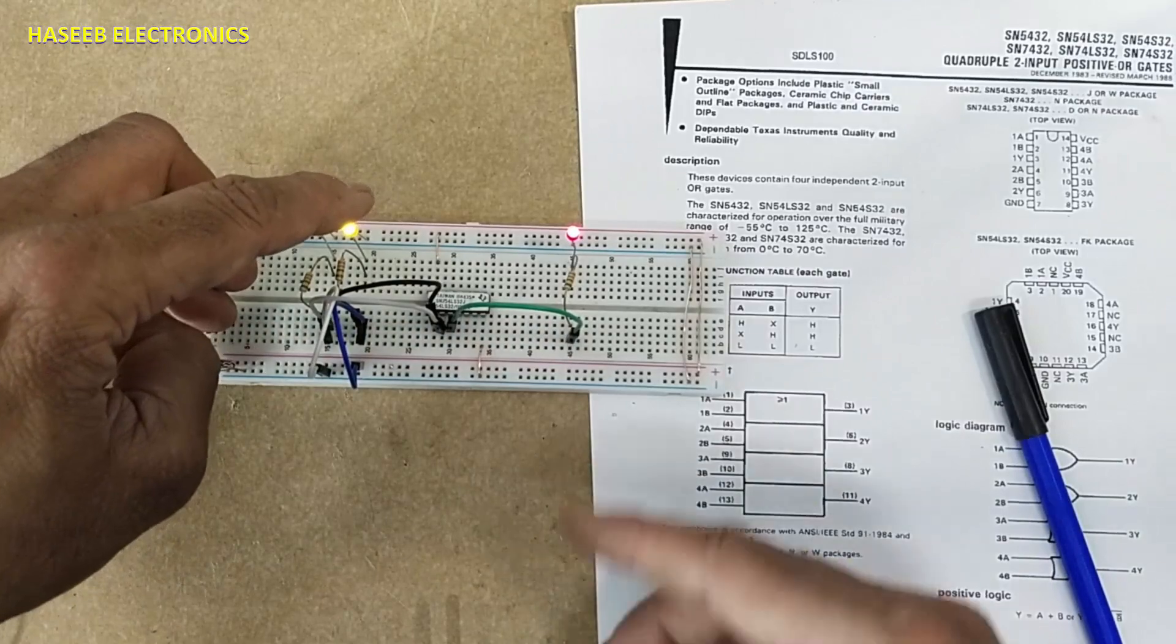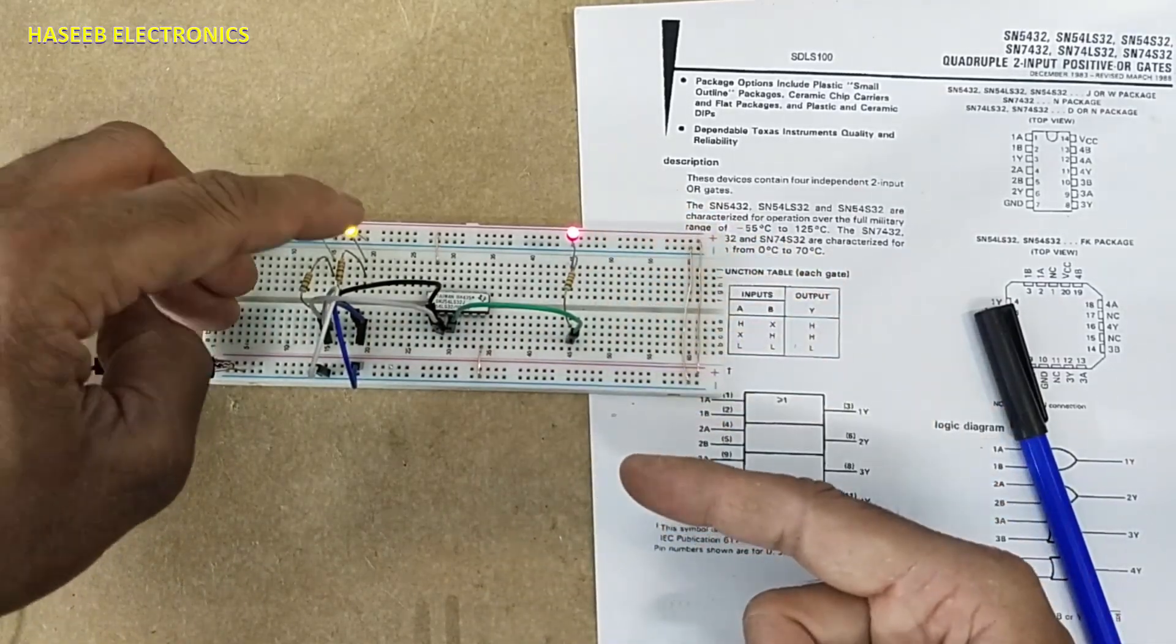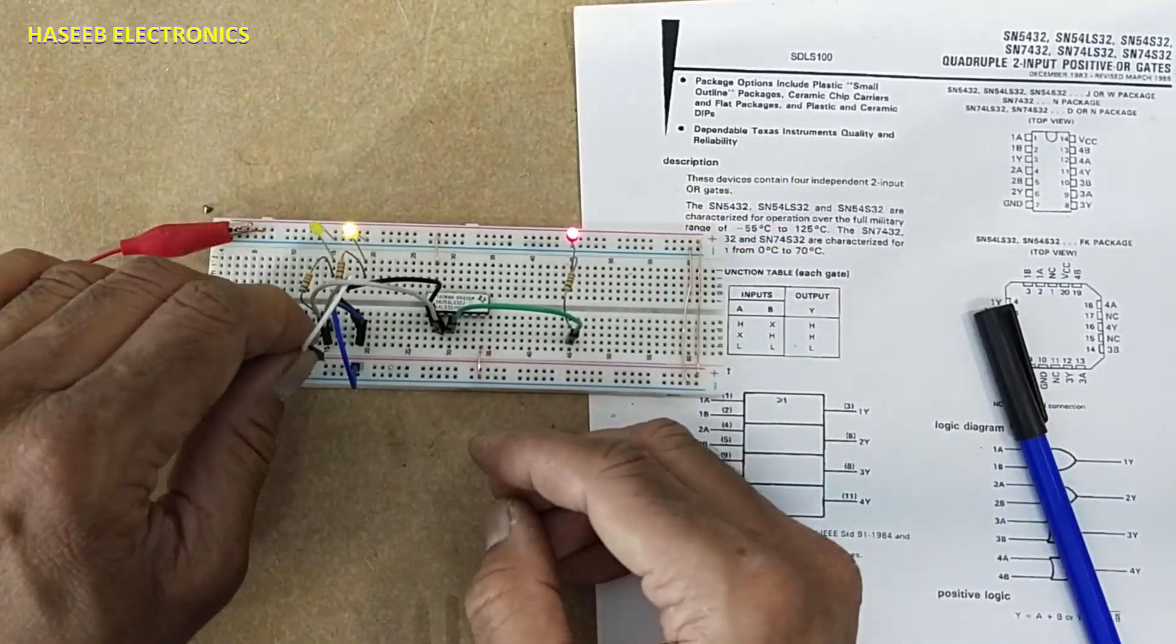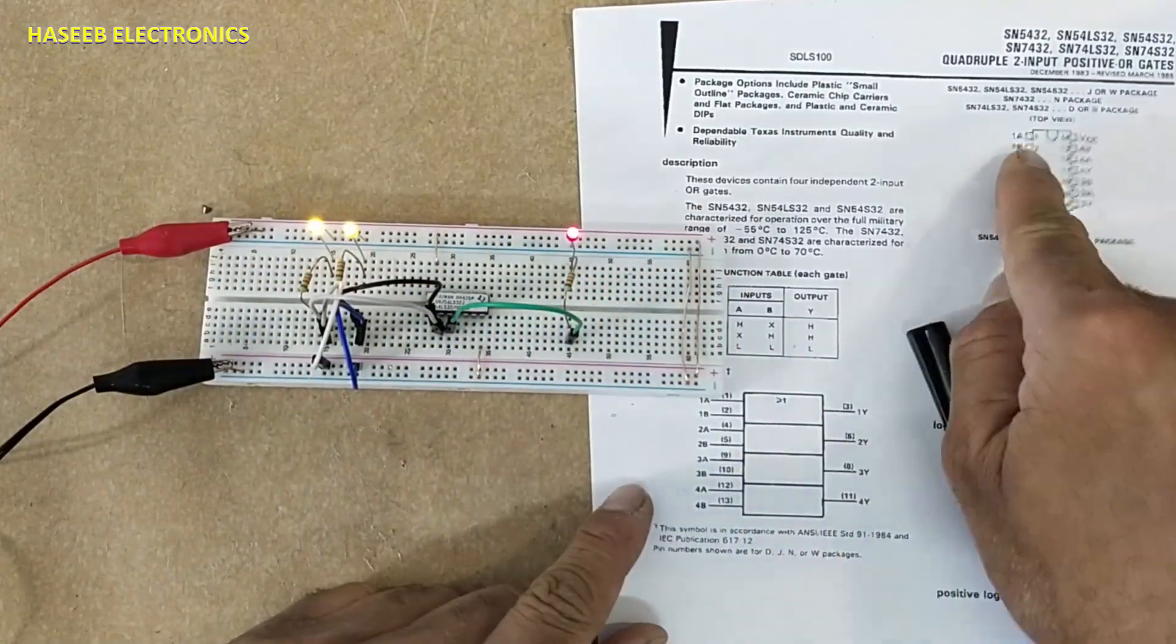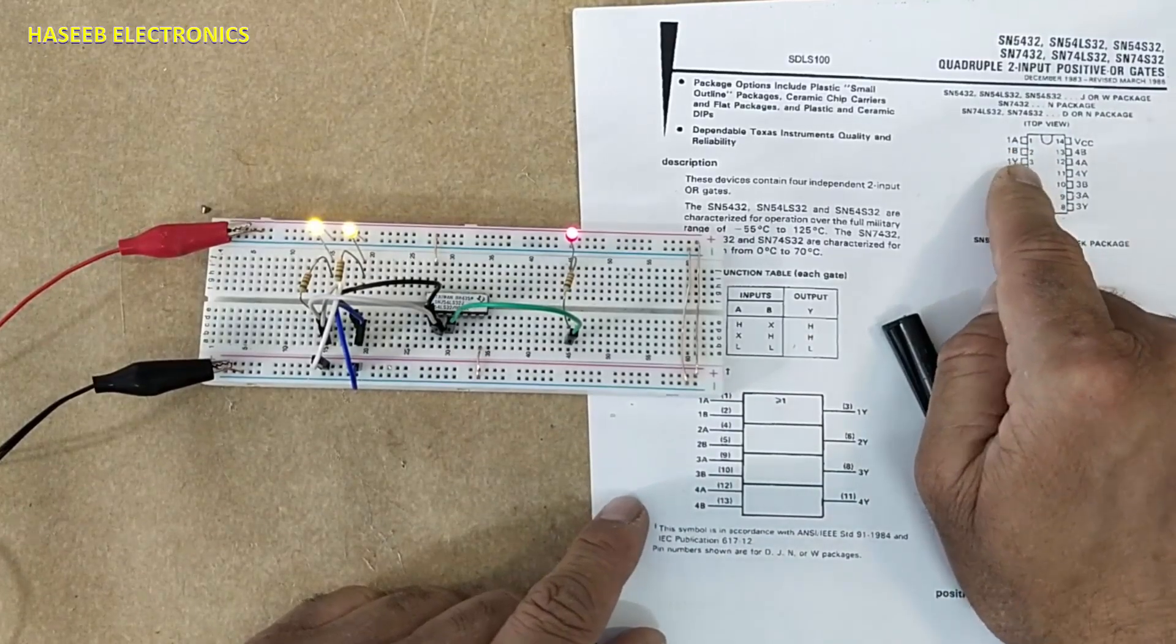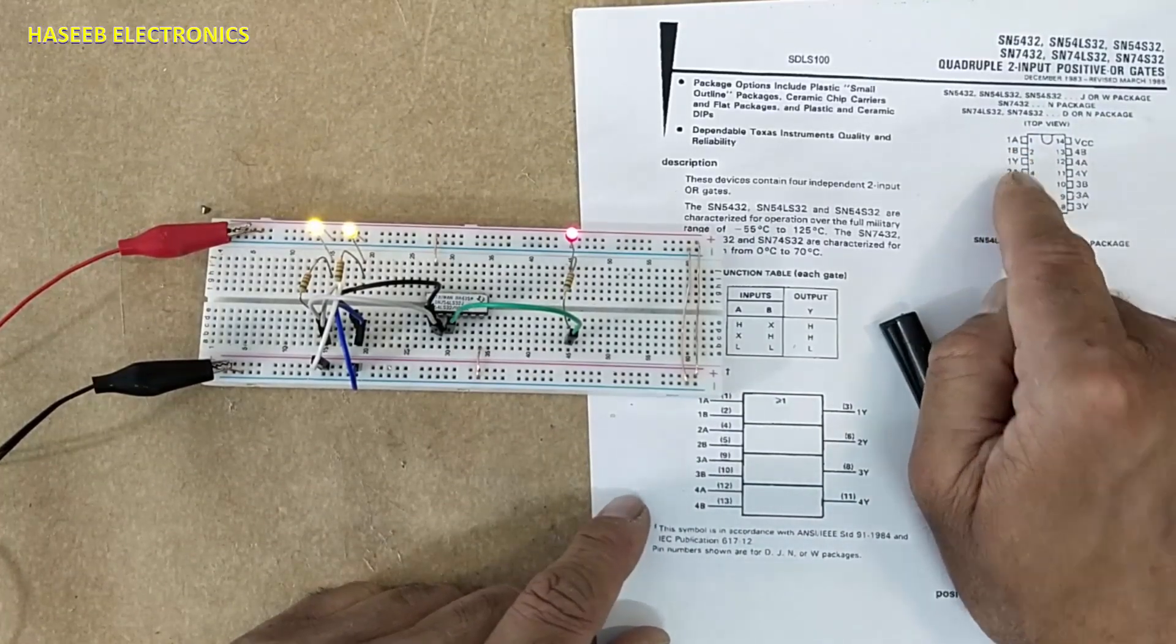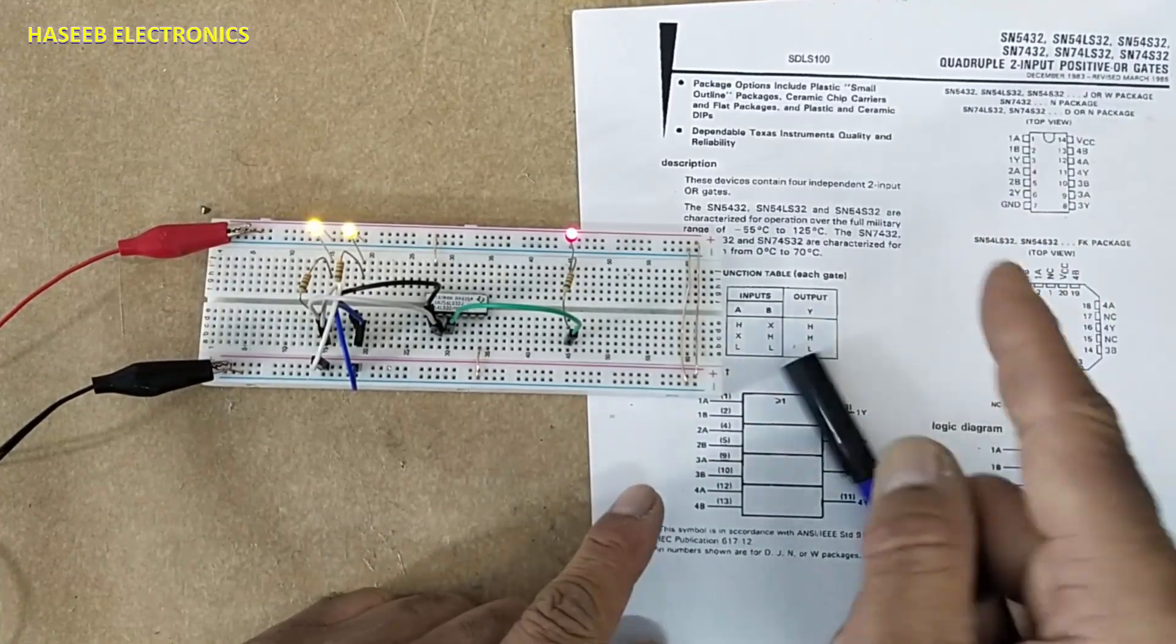High output high, low high, high all inputs are high, the output is high. That means if this IC will receive five volt at pin number one, five volt at pin number two, the output will high.